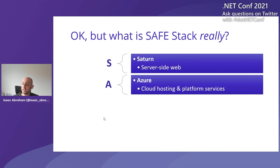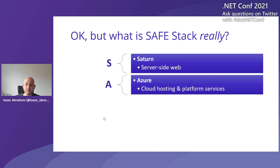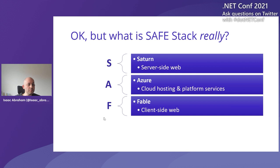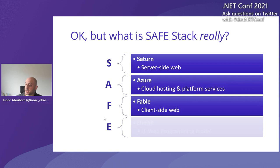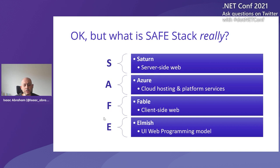A stands for Azure — our cloud hosting platform. You can use whatever you want: AWS, Docker, or run it in IIS locally. We tend to recommend Azure as a starting point. F stands for Fable, which compiles F-Sharp into JavaScript — similarly to how TypeScript compiles into JavaScript. Once you've got that, you can use F-Sharp for both client and server. And E stands for Elmish, which is the web programming model. You may be familiar with MVC or MVVM; with SafeStack, we use MVU — Model View Update — popularized in the Elm programming language. It's simple and works beautifully with F-Sharp's functional model.